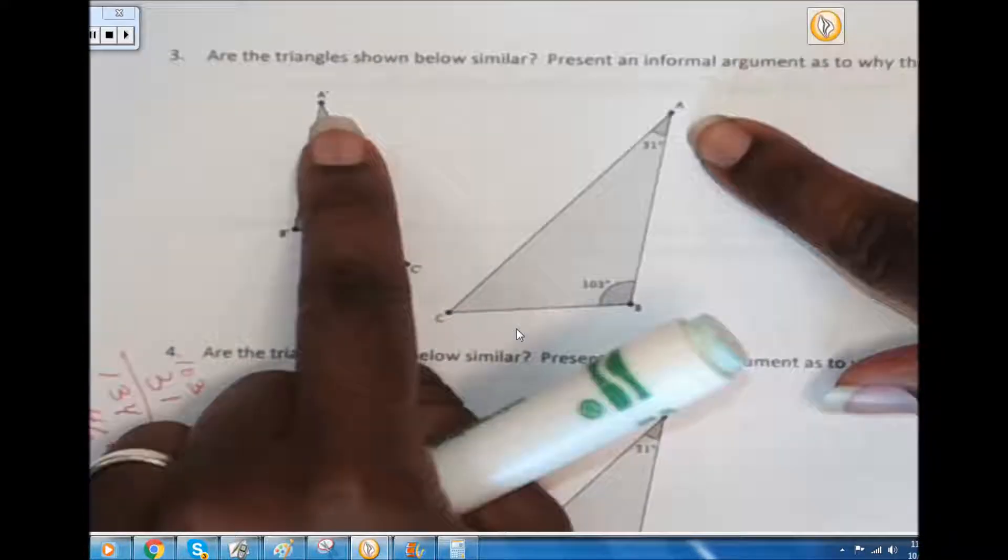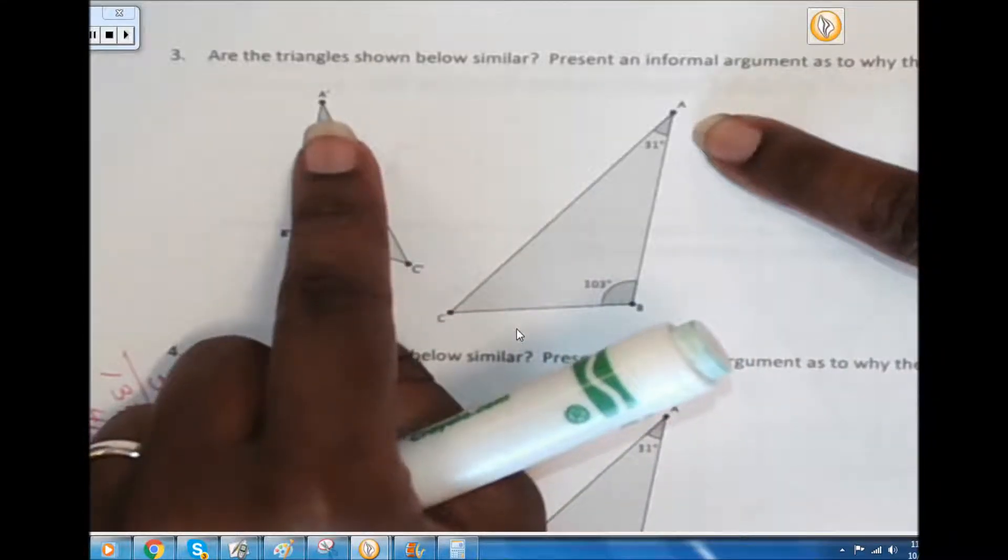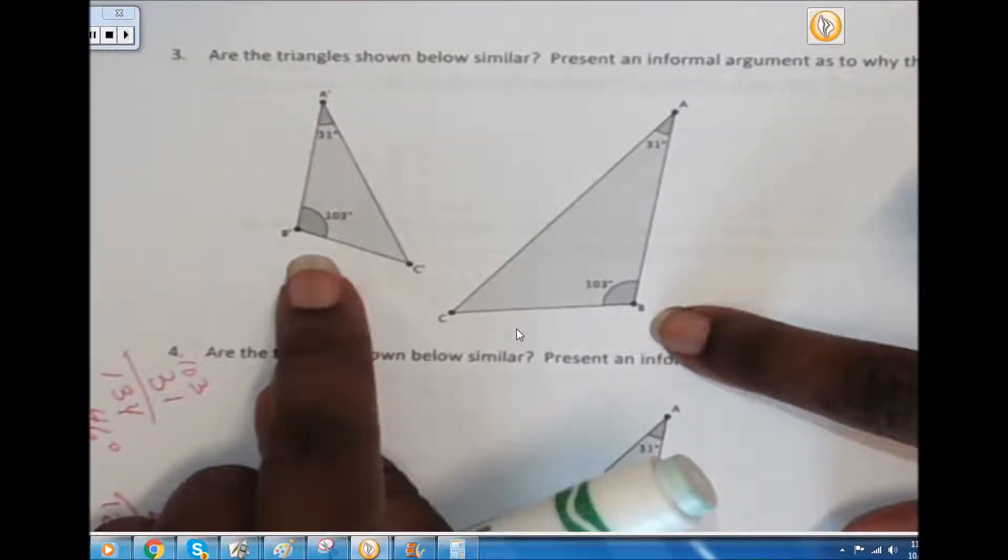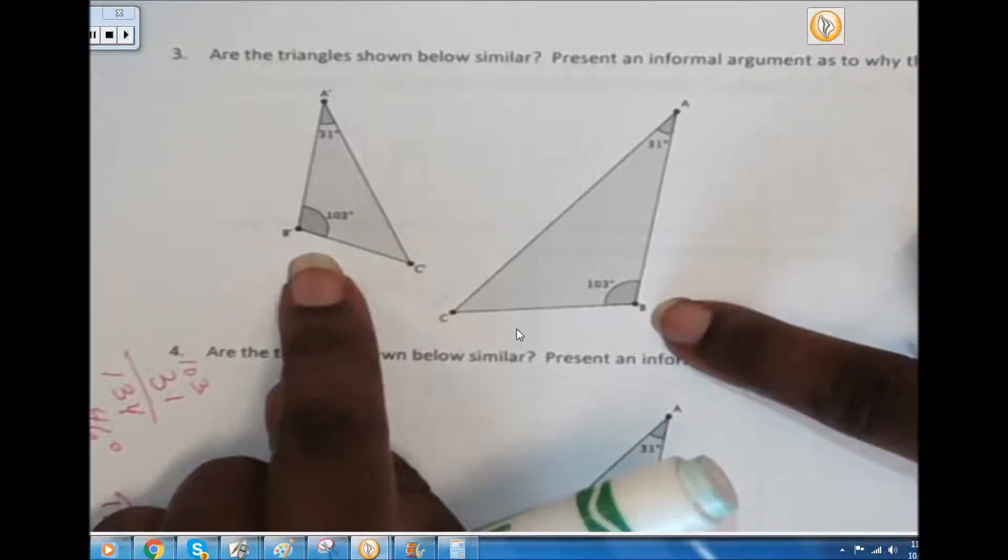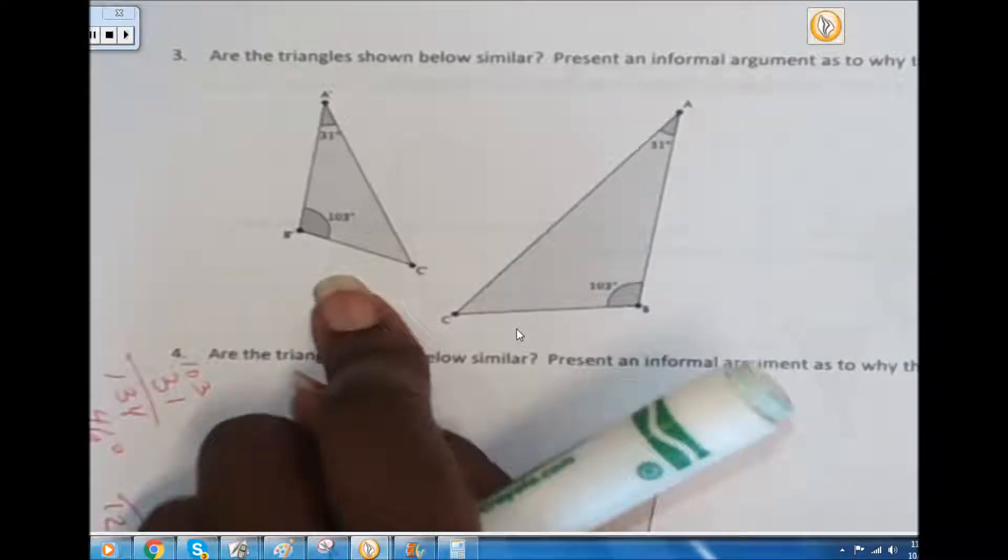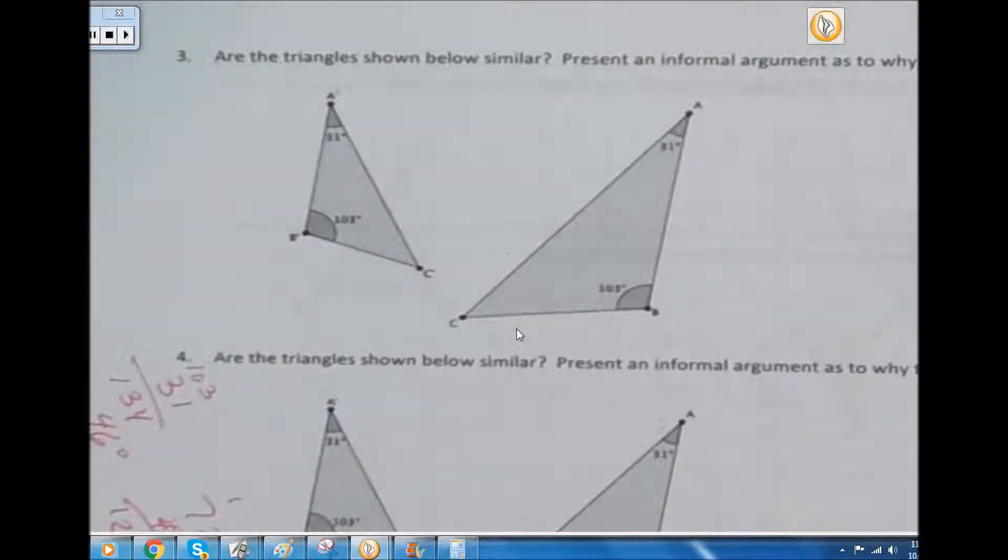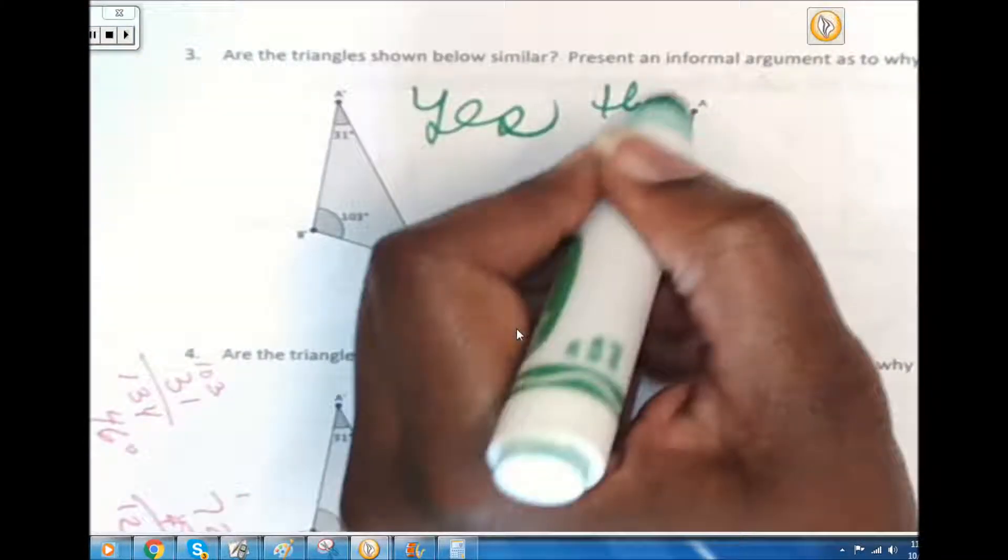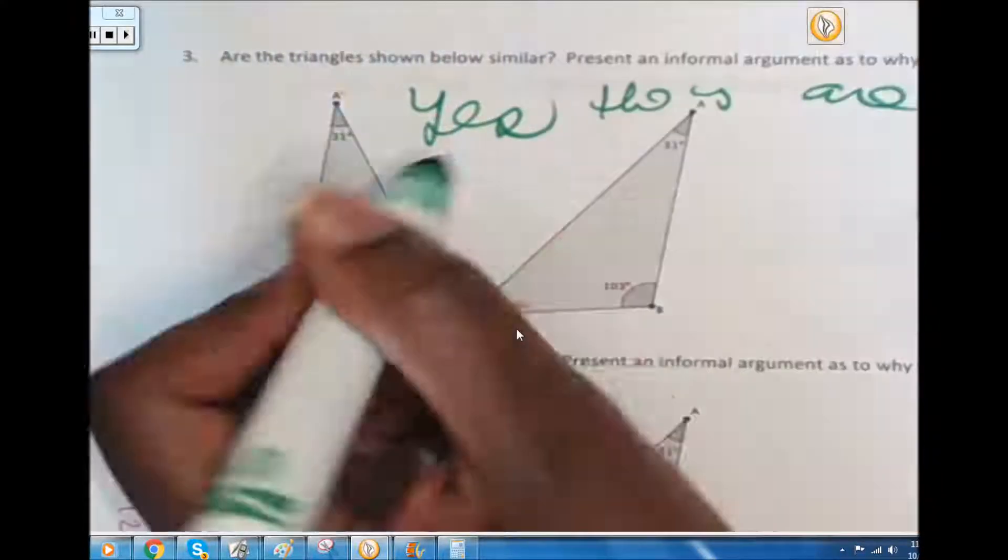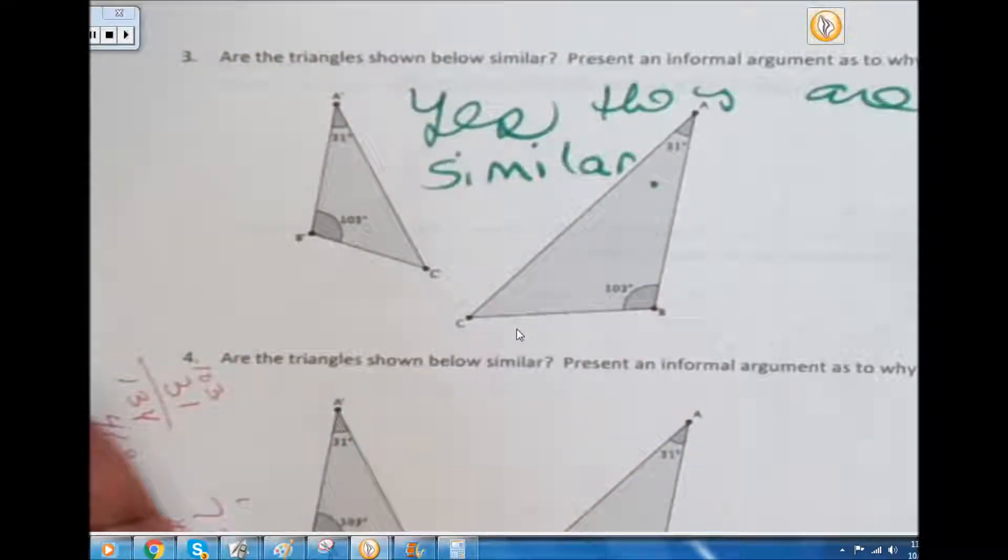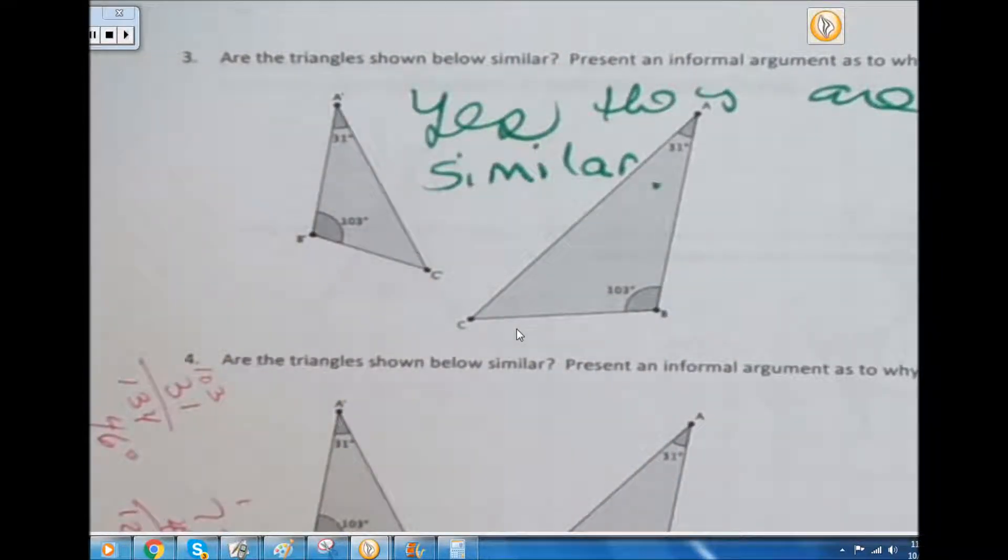Look at angle A and angle A prime, both of them are 31 degrees. Look at angle B and angle B prime, both form 103 degrees. That's two pairs of corresponding angles that are congruent, so we can conclude that they are indeed similar. Yes, they are similar, and if you want to get really complicated you can say because there are two pairs of corresponding angles that are congruent.